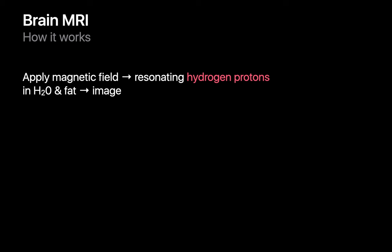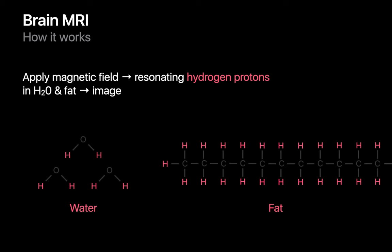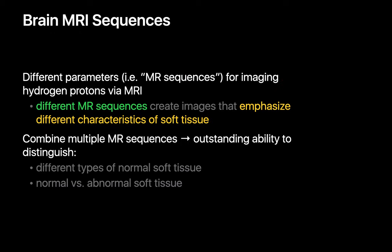MR imaging works differently than CT imaging. With MR imaging, we use a strong magnetic field to cause some of the hydrogen protons inside a patient to resonate or sing. In the human body, most of our hydrogen protons exist within molecules of water and fat. There are different ways to image all of these hydrogen protons, and each different sequence emphasizes different populations of hydrogen protons. A T1 sequence tends to emphasize hydrogen protons in fat molecules, while a T2 sequence tends to emphasize hydrogen protons in water molecules, and a diffusion-weighted sequence tends to emphasize hydrogen protons in water molecules whose random Brownian motion is restricted.